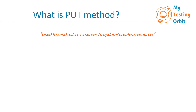First of all, let's see what a PUT method is. The definition says that the PUT method is used to send data to a server to update or create a resource. There are two parts to this definition: update a resource and create a resource. Let's have a look at the first part, which says 'updates an existing resource.'